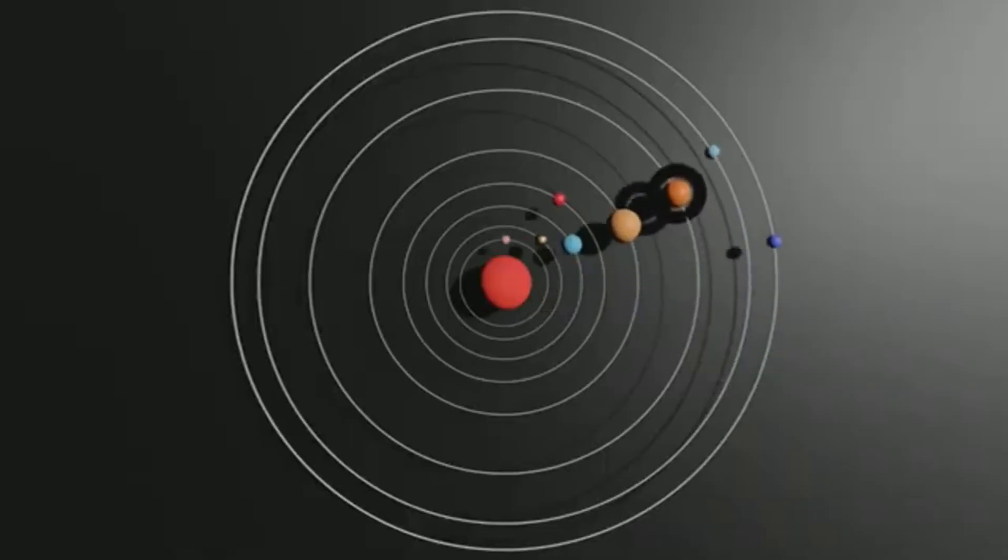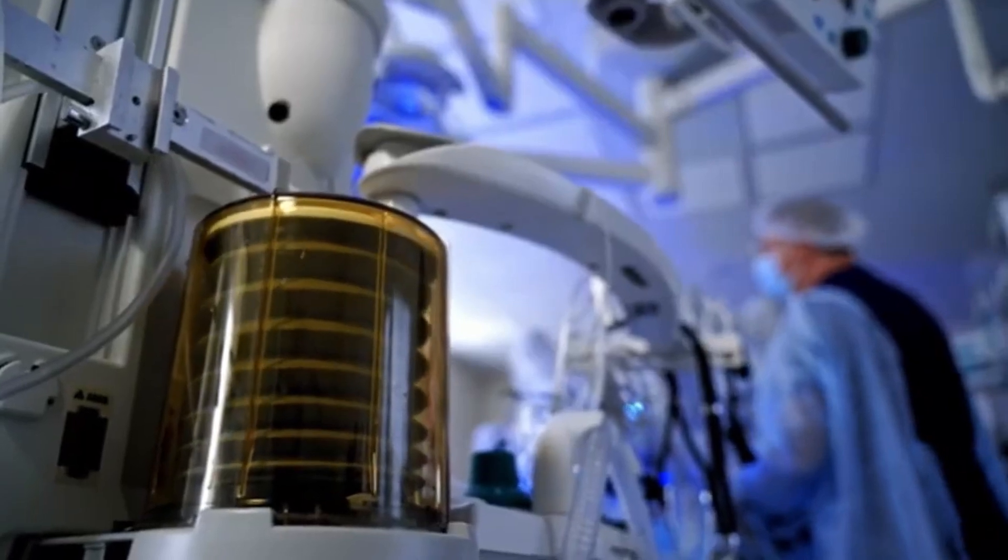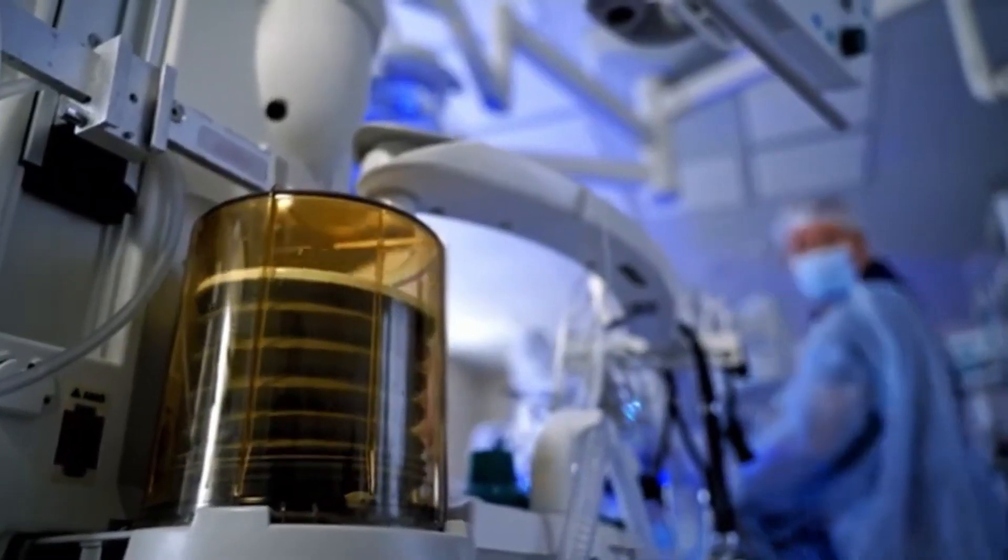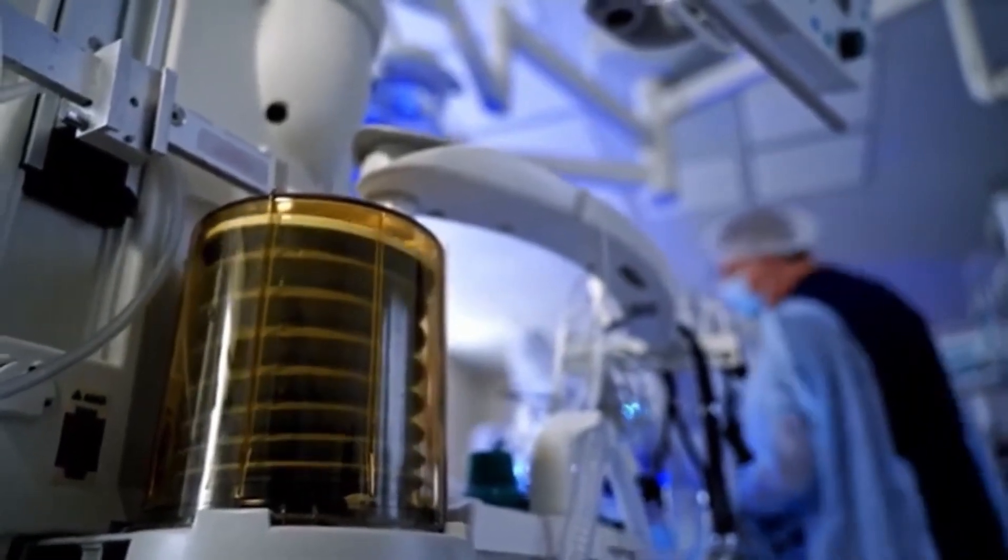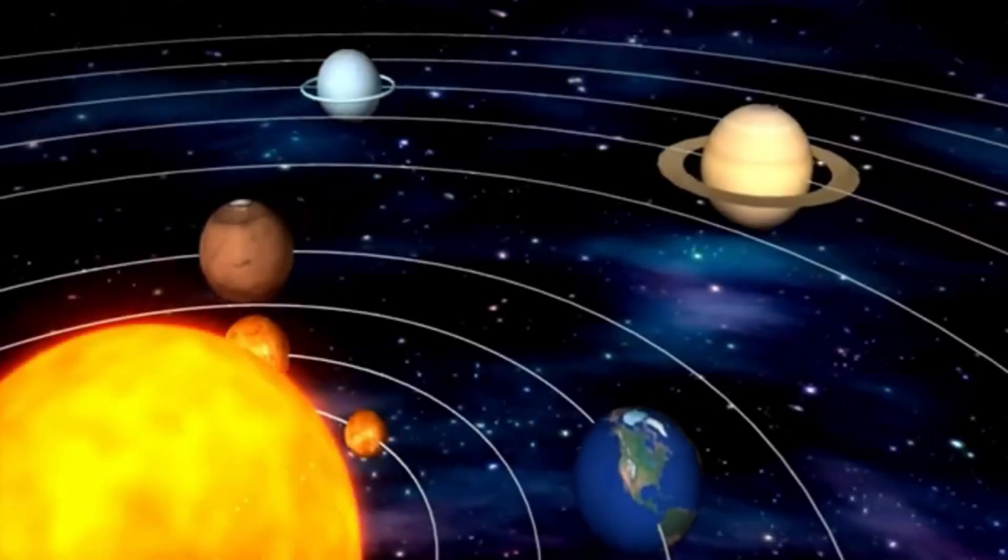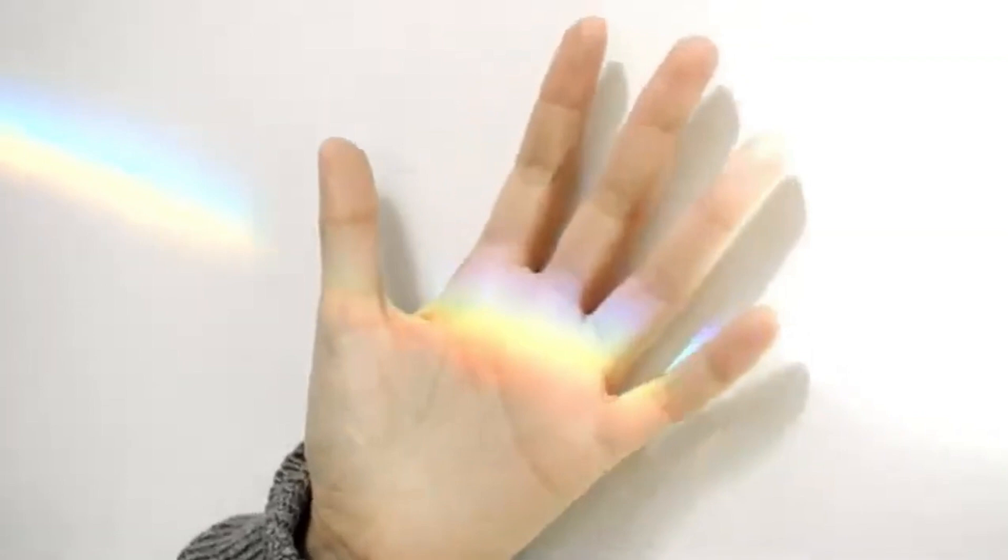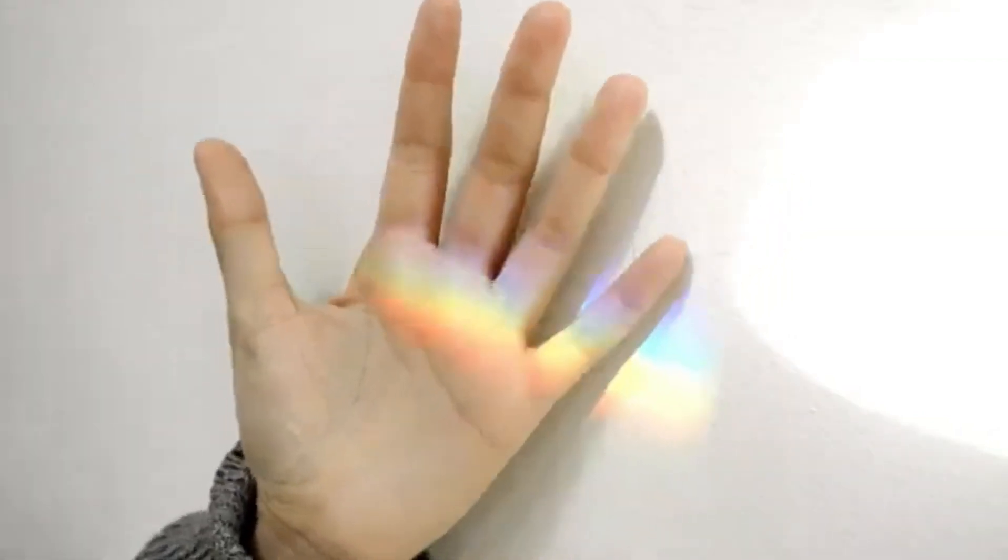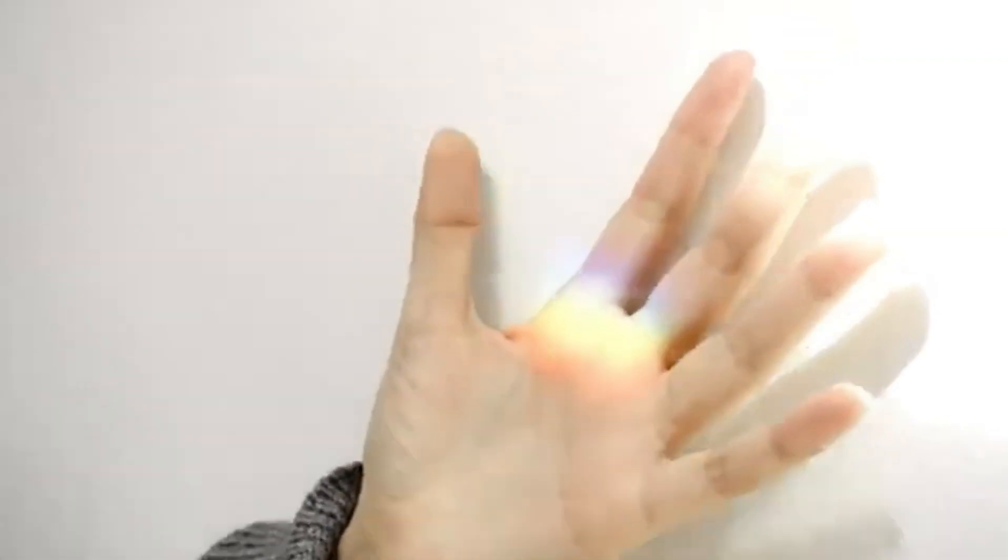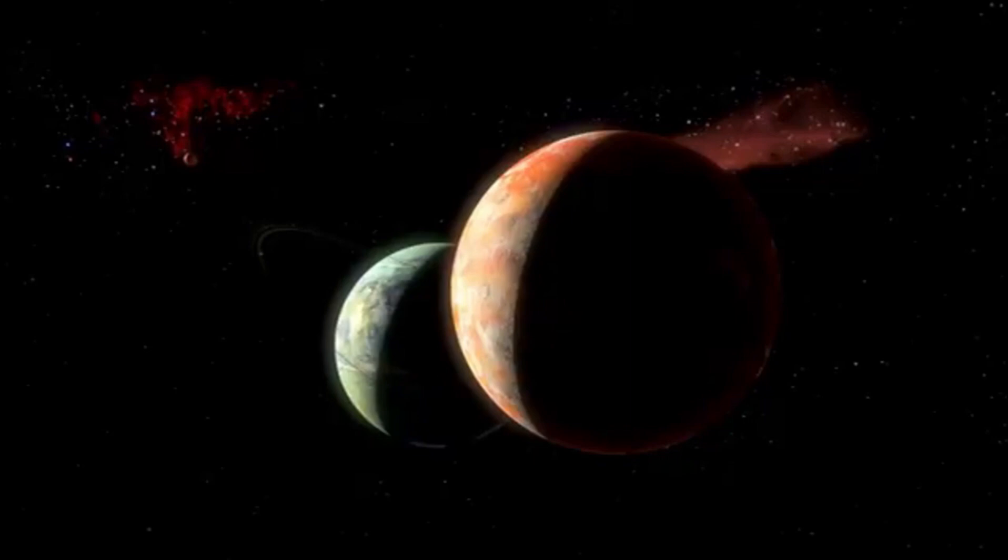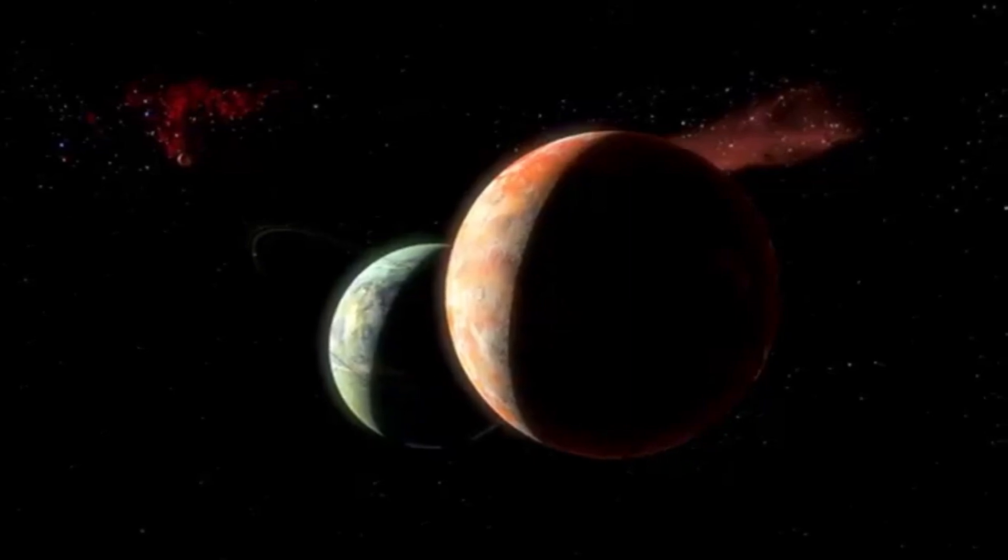Sub-Neptunes like K2-18b could also have a much wider habitable zone than rocky planets like Earth. The thick atmospheres of these planets would trap heat from their stars, allowing liquid water to exist at distances from the star where, on Earth-like planets, it would be either too hot or too cold for water to remain in liquid form. This extended habitable zone makes sub-Neptunes ideal targets in the search for life beyond our own planet. The fact that these planets are also larger makes them easier to detect, making them prime candidates for observation by powerful telescopes like the JWST.